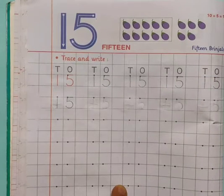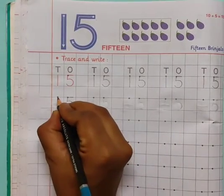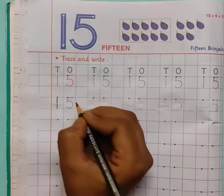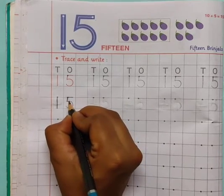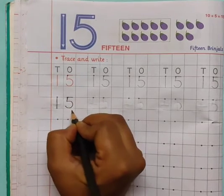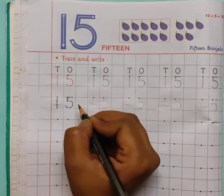How to write number 15? Let's start. First we will make standing line 1, sleeping line, standing line, curve. 5, 1, 5, 15.